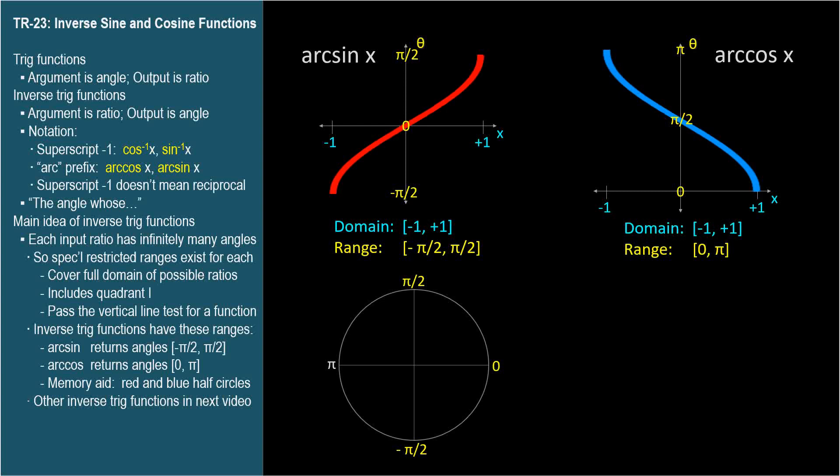We associate sine with the vertical y-axis distances, which are red in this video series. So imagine a red vertical diameter on the y-axis and shade the right half of the circle. Shade the half of the circle that includes quadrant 1. That's the memory rule.